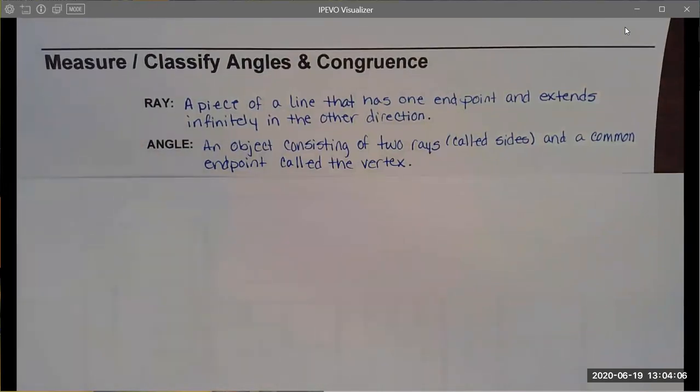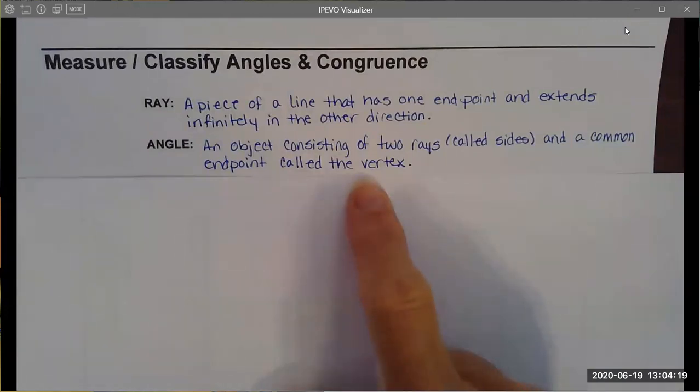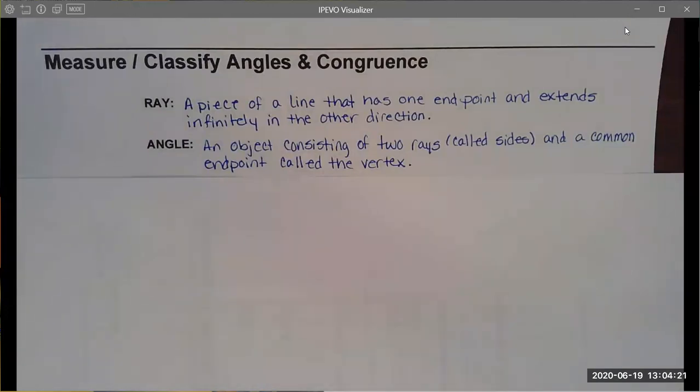We've already talked about rays - how they have an endpoint and extend infinitely in the other direction. We also talked about how an angle is comprised of two rays that share a common endpoint called the vertex. The rays form the sides of the angle.